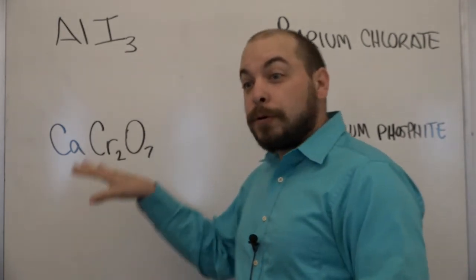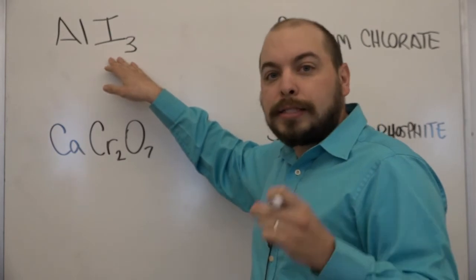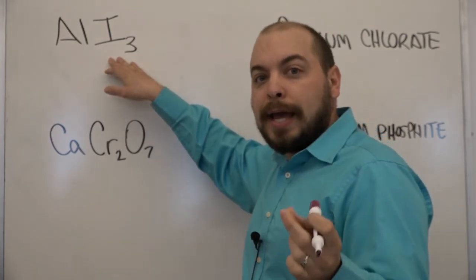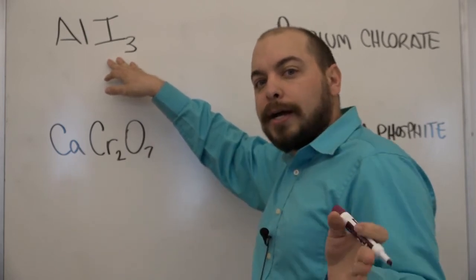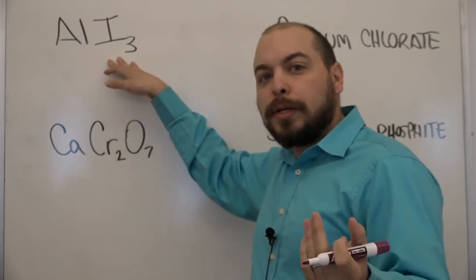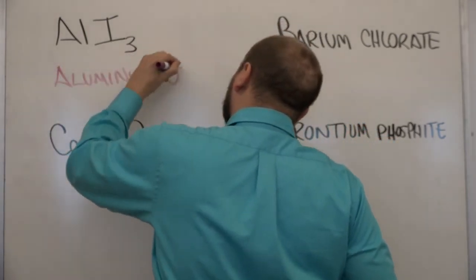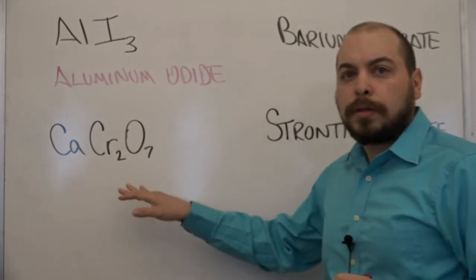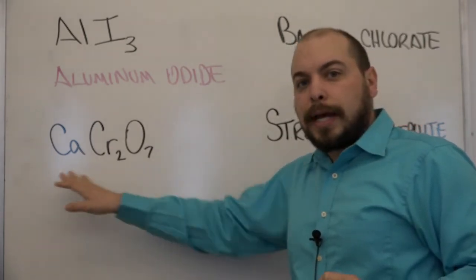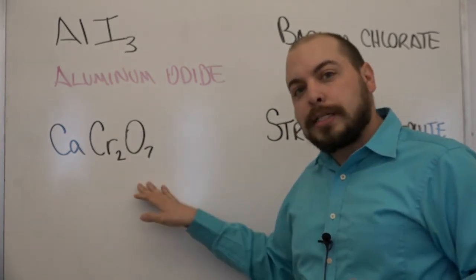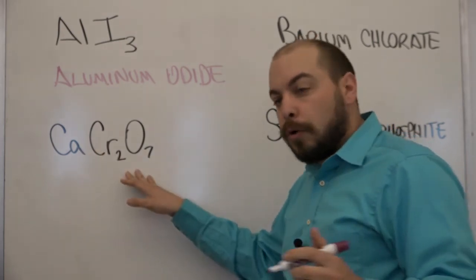Alright, so the first one we have aluminum and we have iodine. This is a binary compound which means it's going to end in ide, I-D-E. So what we're going to do is we're going to simply replace the end of iodine with ide and it becomes aluminum iodide. Now for the second compound, calcium, now this is a polyatomic ion, dichromate, so we're dealing with calcium dichromate.